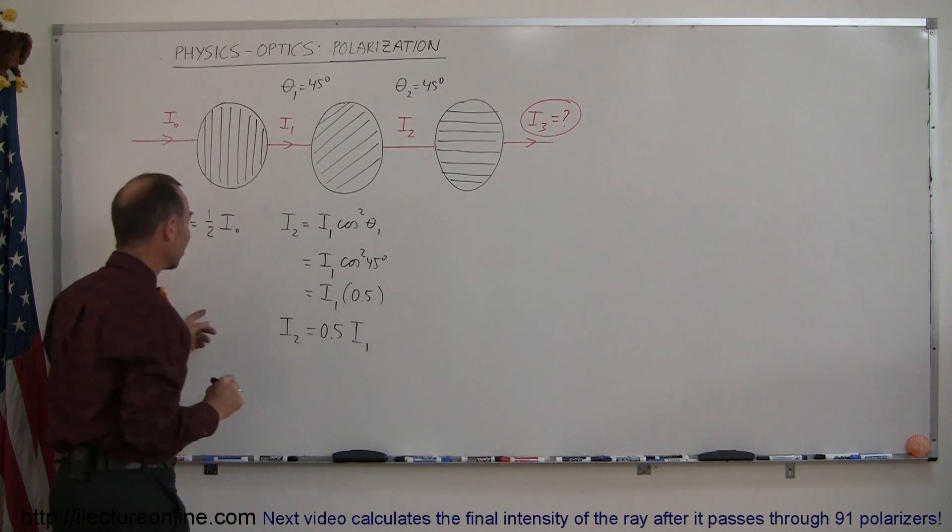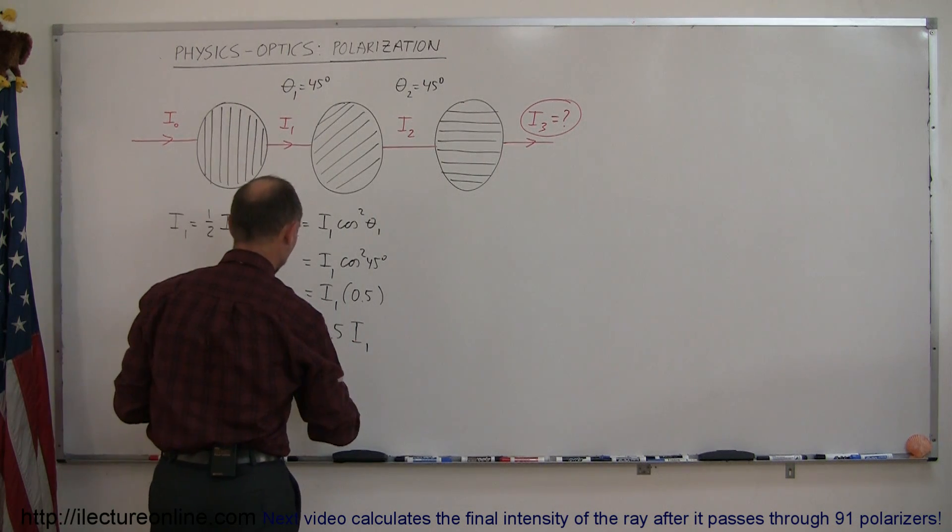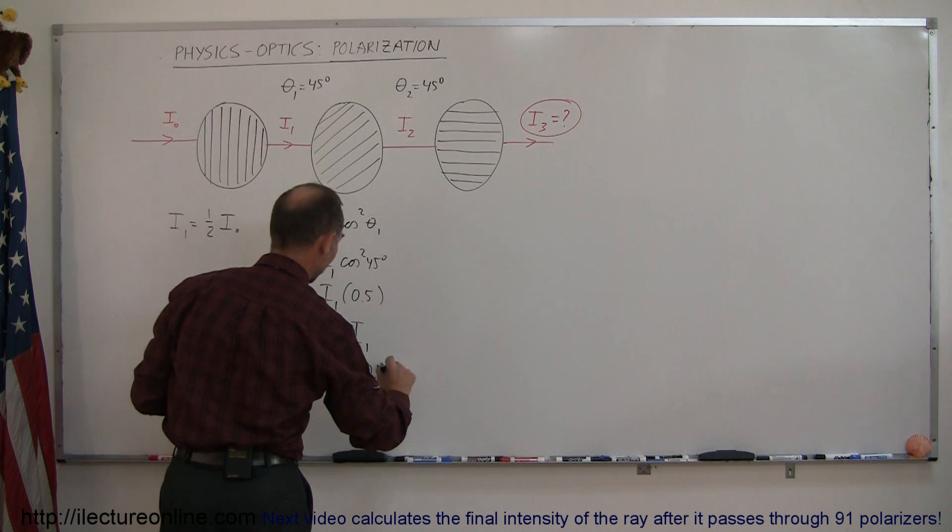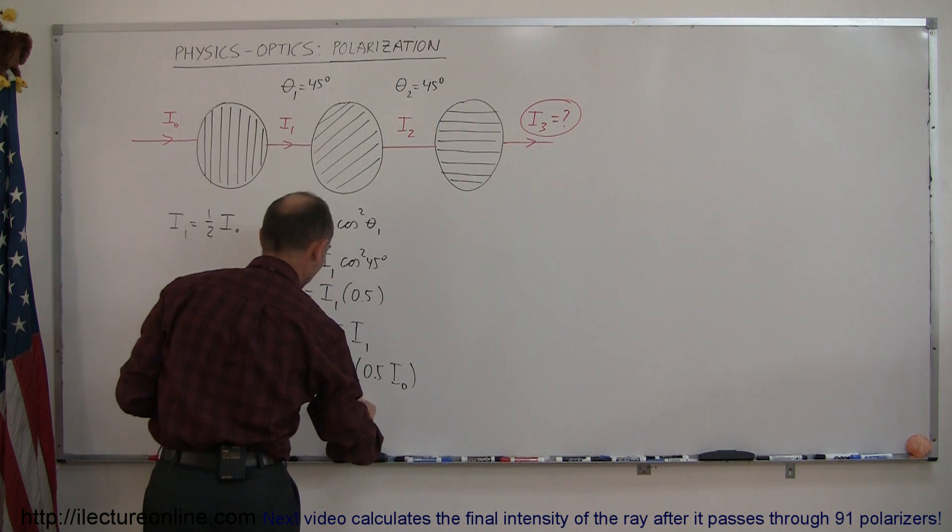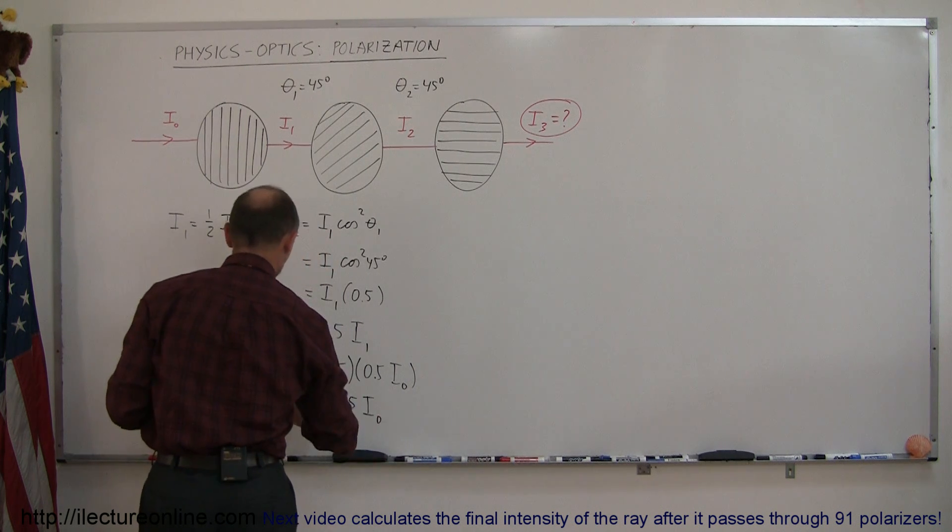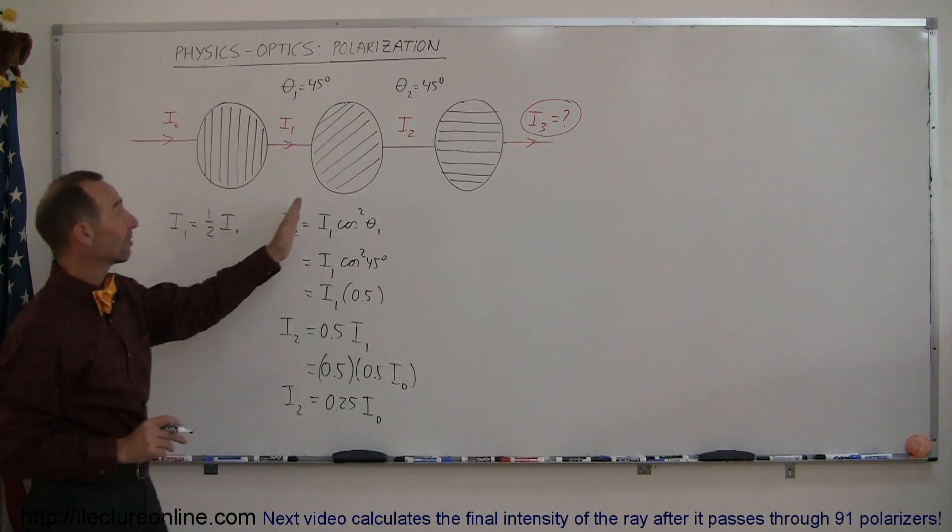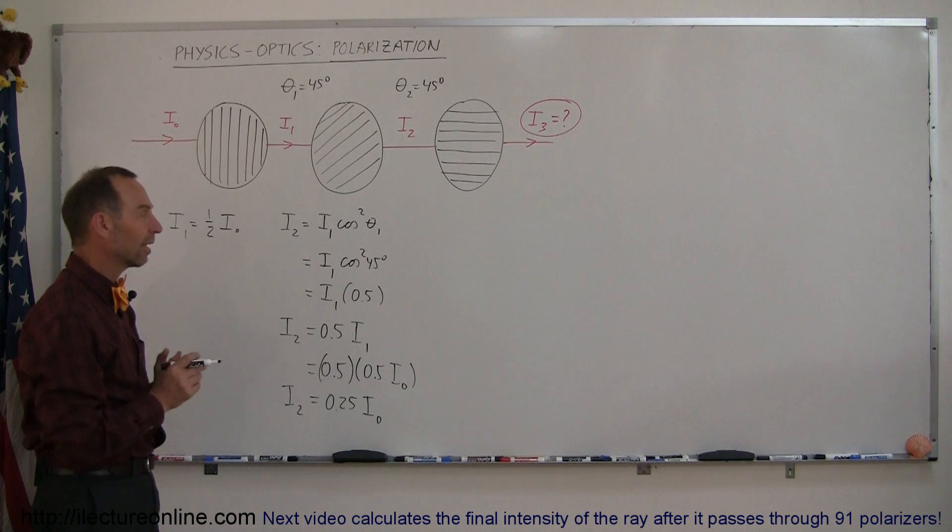Which means it's 0.5 times I₁. And of course, since I₁ is equal to half of I₀, that would be equal to 0.5 times 0.5 times I₀, which means you're now down to 0.25, or a quarter of its initial intensity. So the light coming past the second polarizer will now only be one-fourth of the original intensity.